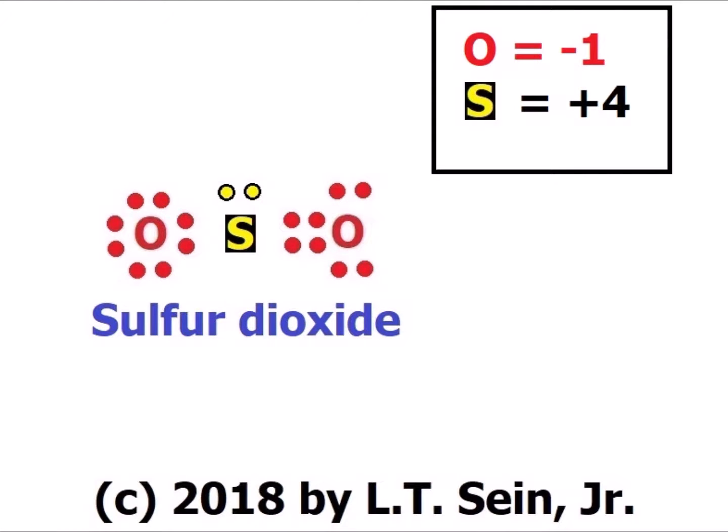In sulfur dioxide, we have a total of 18 valence electrons. The only way to satisfy the octet rule for each atom is to have one single bond and one double bond between sulfur and oxygen. This structure tells us that the actual bonding is a resonance hybrid — somewhere between a single and a double bond. With 2 electrons remaining on sulfur, the oxidation number of sulfur in sulfur dioxide is +4.